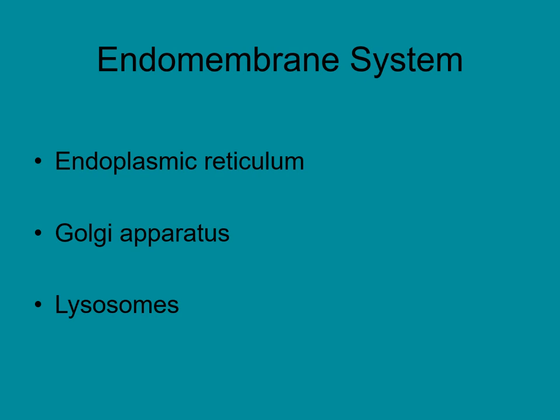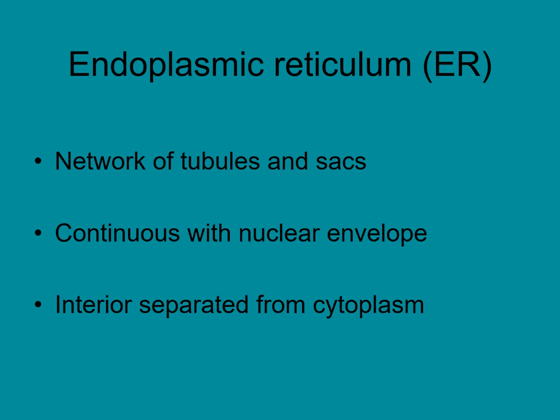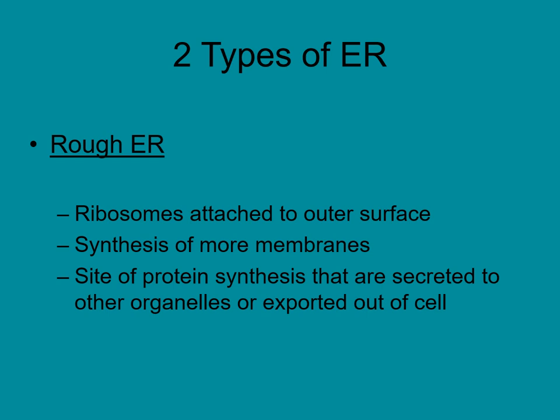Some organelles are part of the endomembrane system, which includes the endoplasmic reticulum, Golgi apparatus, and lysosomes. The endoplasmic reticulum (ER) is a network of tubes and stacks, continuous with the nuclear envelope, with an internal environment separated from the cytoplasm. There are two types: rough ER, which has ribosomes attached to its outer surface, and smooth ER, which does not. The rough ER is involved with membrane synthesis and protein synthesis.